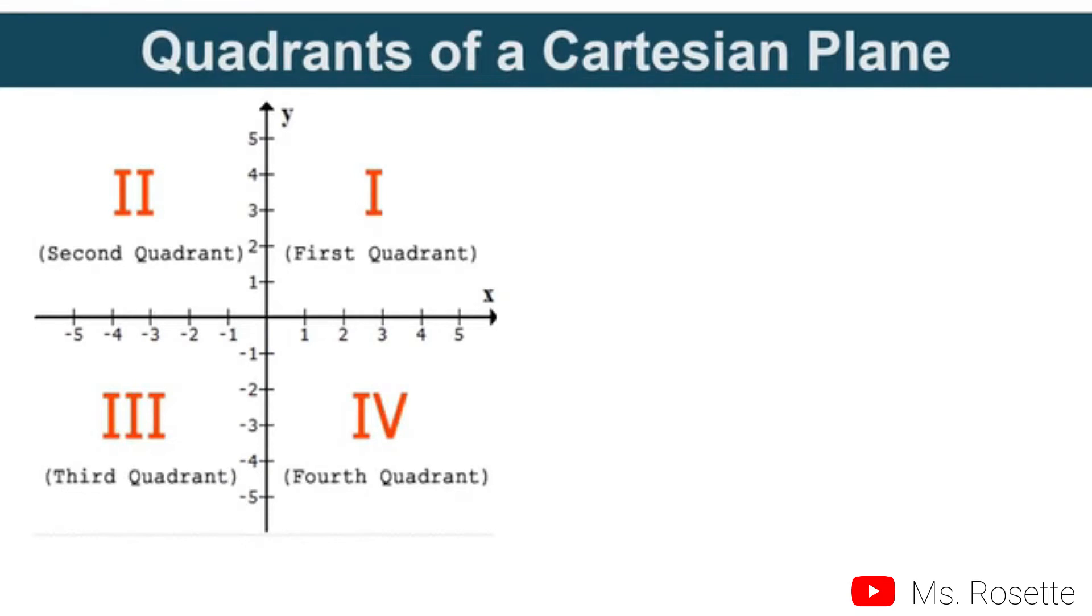Now let's proceed to quadrants of the Cartesian plane. Our Cartesian plane can be divided by 4. We call these quadrants. The first quadrant, which is in this area, has positive coordinates. The x is positive and y is also positive.